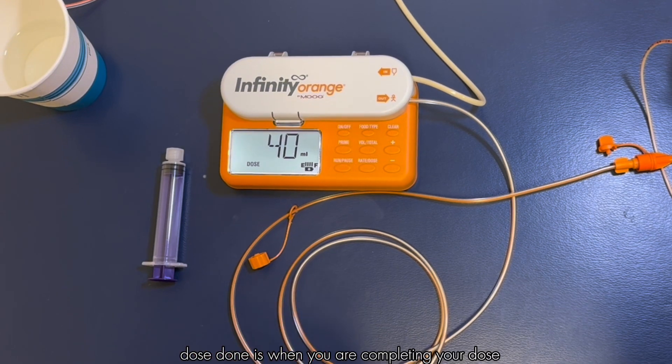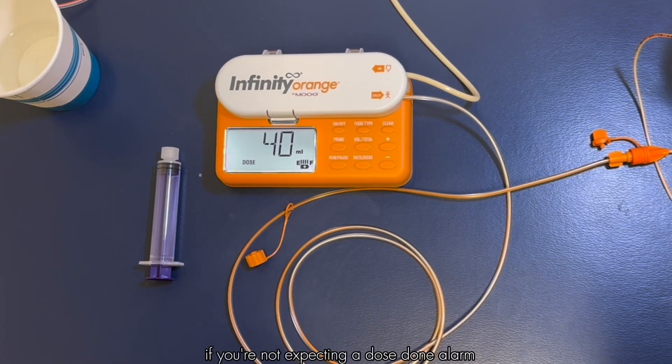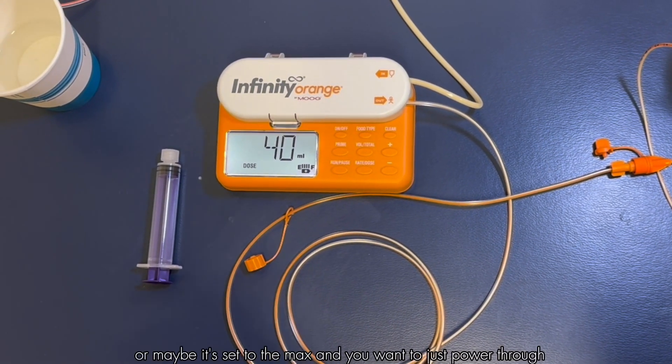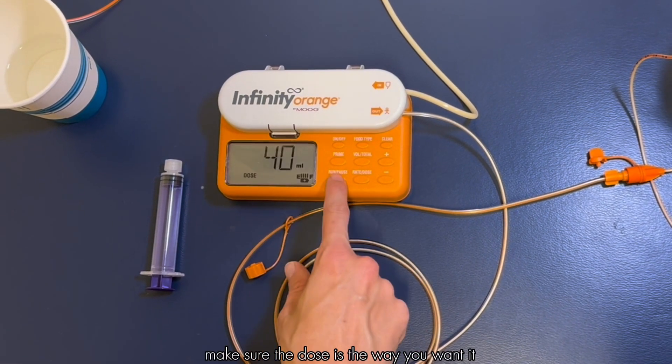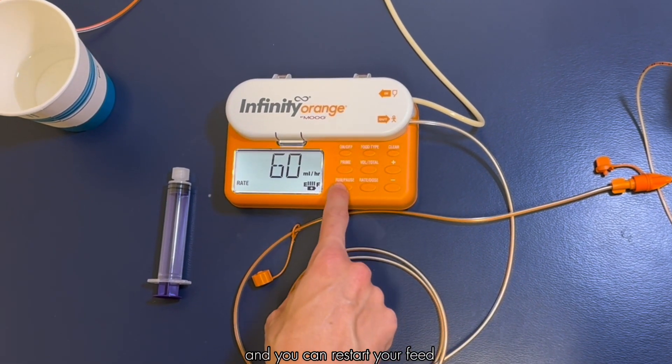Dose done is when you are completing your dose. If you're not expecting a dose done alarm or maybe it's set to the max and you want to just power through, you would just hit run pause, make sure the dose is the way you want it, and you can restart your feed.